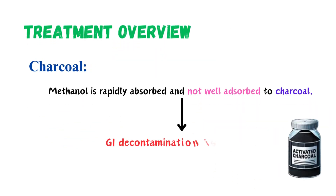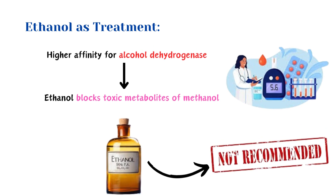Treatment overview: since methanol is not well adsorbed to charcoal, gastrointestinal decontamination is generally not helpful. Traditionally, ethanol has been the mainstay of treatment. Ethanol has a higher affinity for alcohol dehydrogenase than methanol, inhibiting its metabolism into toxic metabolites. However, ethanol is not preferred because it requires close monitoring due to side effects like intoxication, low blood sugar, and liver stress.